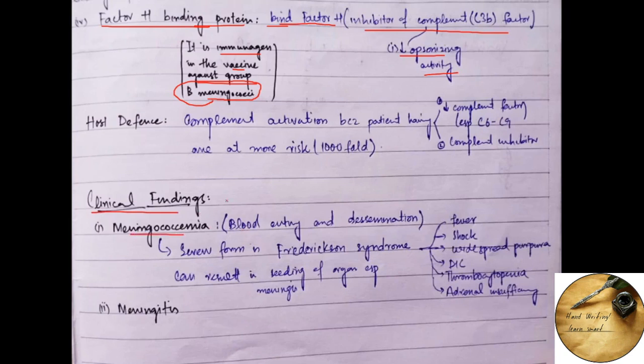Meningococcemia, what is meningococcemia? It is the entrance of the bacteria to the blood and dissemination to the other organs. And its more severe form is Waterhouse-Friderichsen syndrome, which is characterized by fever, shock, widespread purpura which is due to disseminated intravascular coagulation, thrombocytopenia and adrenal insufficiency.